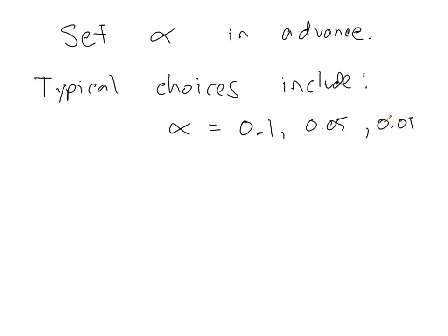Alpha equals 0.1, 0.05, or 0.01. Now these are typical ranges. This is kind of the, of the three, the least stringent.